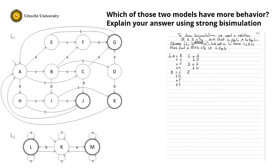In E, I can do an S that brings me to F, or a T that brings me to G. In F, I can do an S that brings me to G. And in G, I can do a silent step Tau that brings me back to A. In H, I can do an S that brings me to I, and a T that brings me to J. In I, I can perform an S that brings me to J, and a T that brings me to K. In J, I can do a Tau step — a silent step — to A. And in K as well, a Tau step to A. The end states in L1 are G, J, and K.